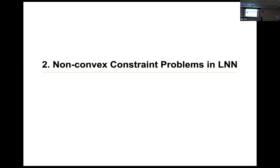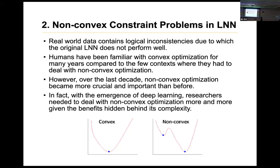I'm going to introduce the concept of the non-convex problem. Non-convex constraints arise in real data because the data contains logical inconsistencies, which causes the original LNN element to not perform well. We still deal with many convex problems and are very good at solving them. A convex problem is related to the key optimization problem — it can be solved in polynomial time, very quickly, and there are many methods to solve it. Any method you pick can solve a convex problem efficiently.